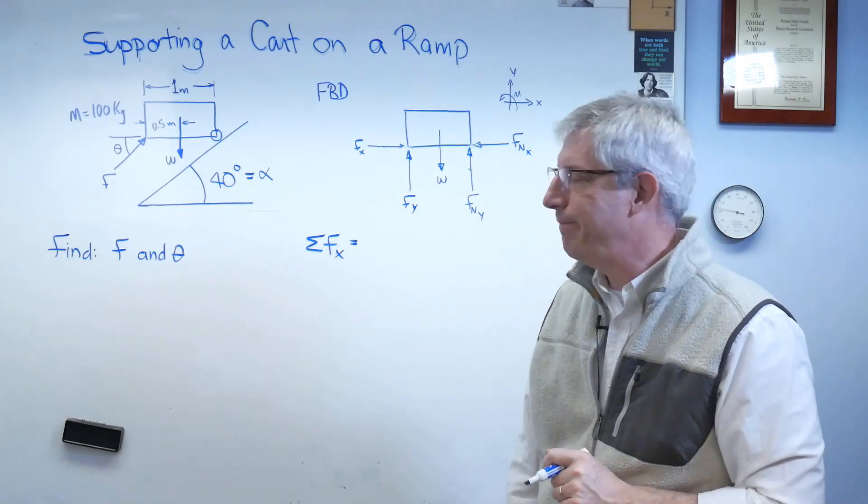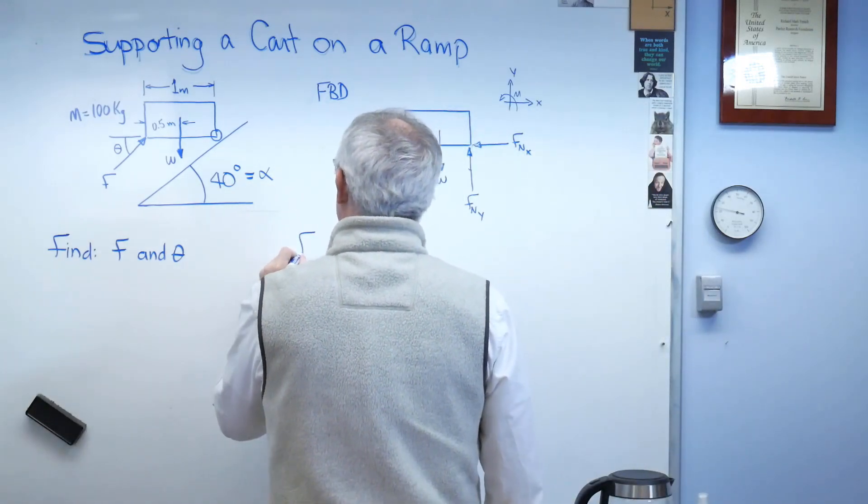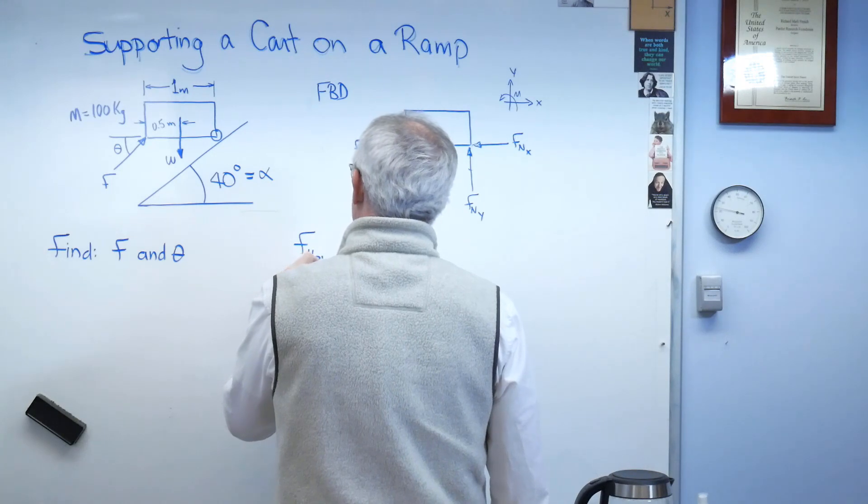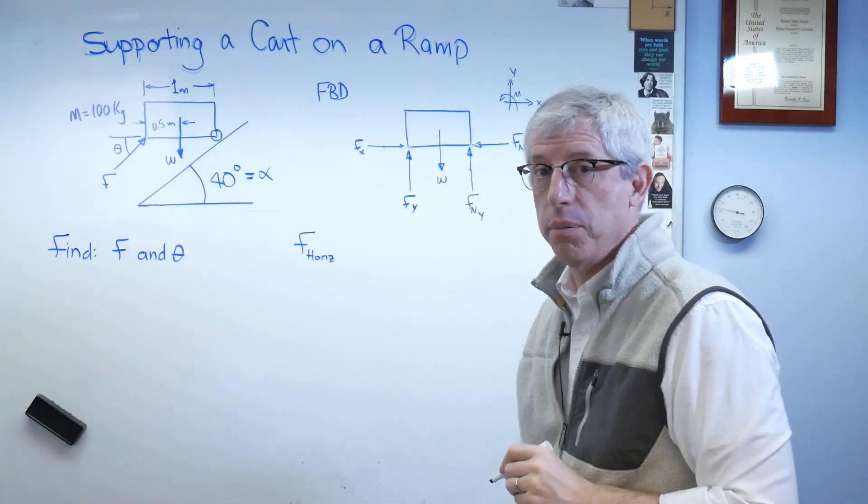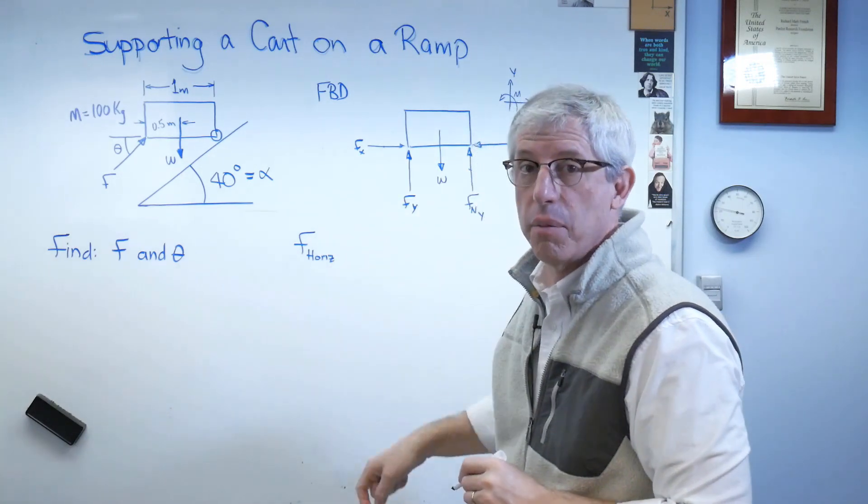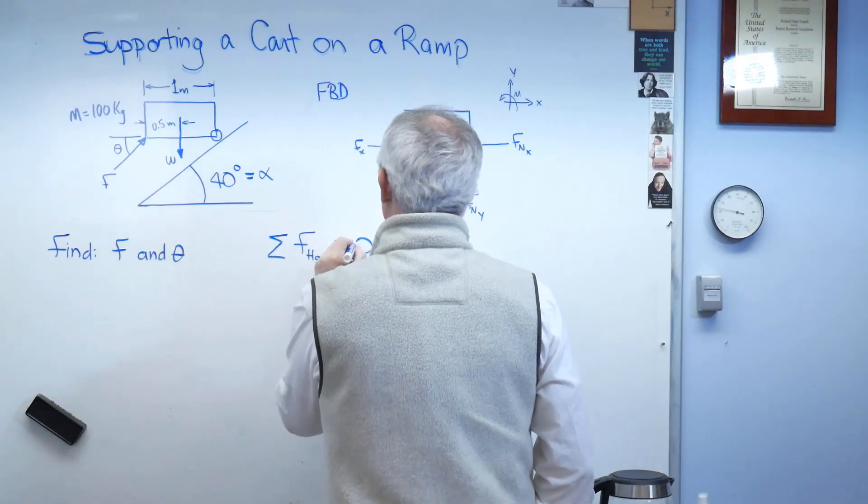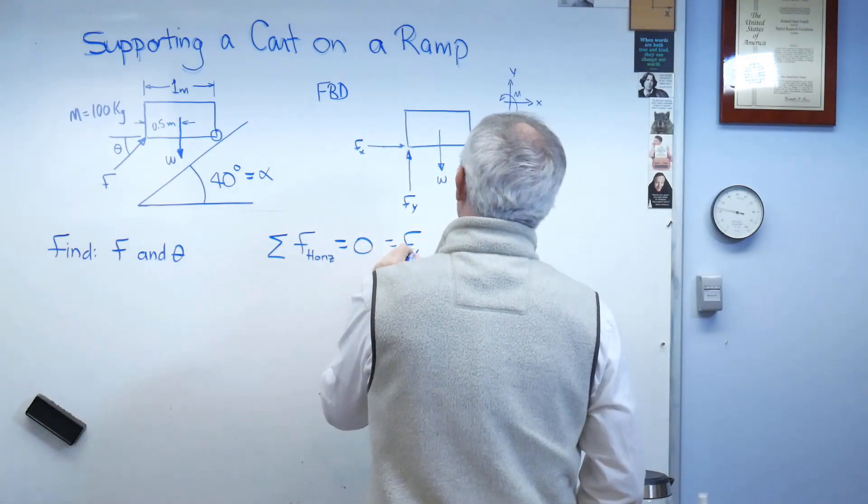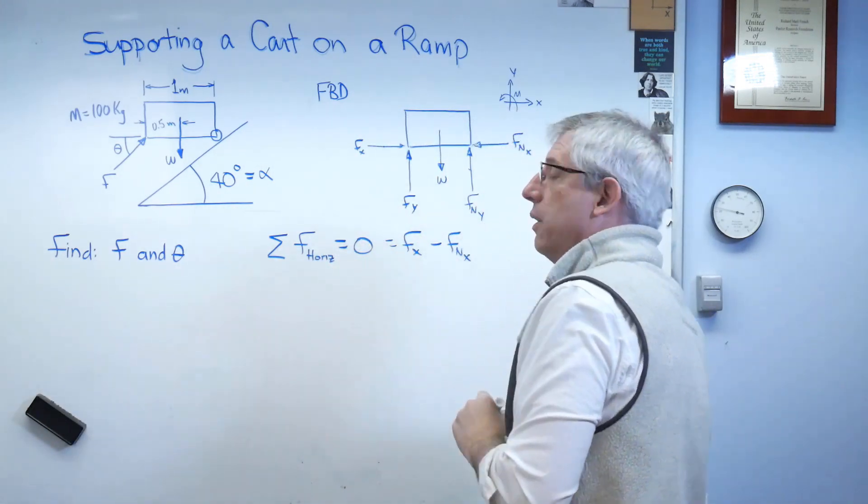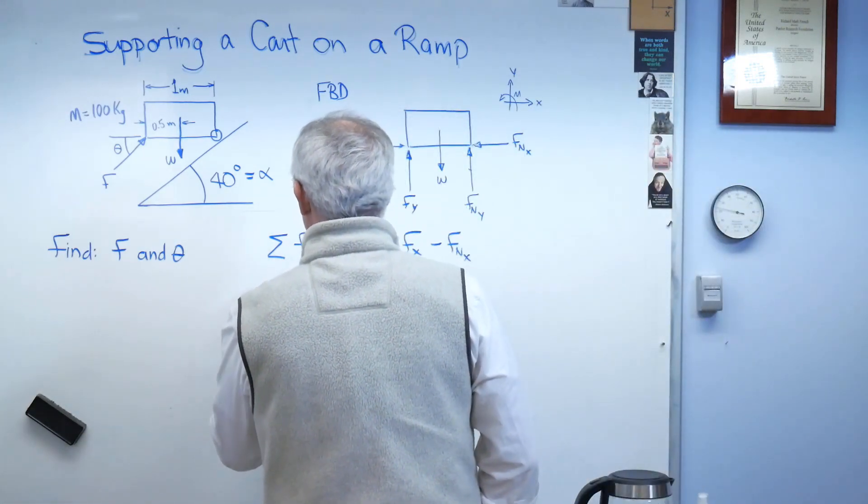So I'm going to fix this. I'm going to call this horizontal to distinguish it from that. F of x is something we're solving for, but this is the sum of the forces in the horizontal direction. It's really bad to write ambiguous equations. Don't do that. Okay, so there's the forces in the horizontal direction. Sum of the forces in the vertical direction.